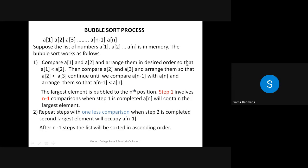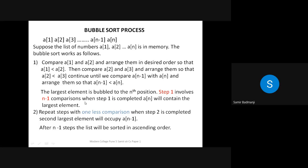First compare a1 and a2 and arrange so that a1 < a2. Then compare a2 and a3, continue until we compare a(n-1) with an. If a1 is greater than a2 then interchange — a2 comes first, a1 comes second. Then compare the second with the third; if greater, interchange; if smaller, keep it. The largest element is bubbled to the nth (last) position. Step 1 involves n minus 1 comparisons, and when step 1 is completed, an contains the largest element.